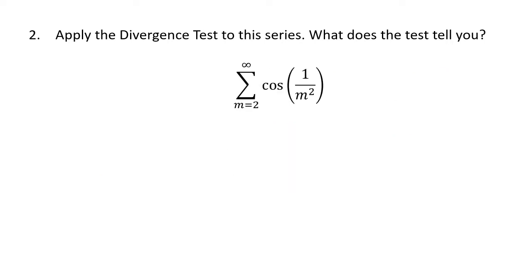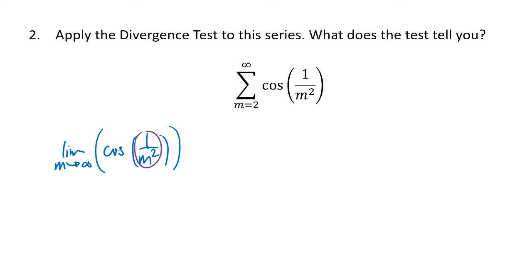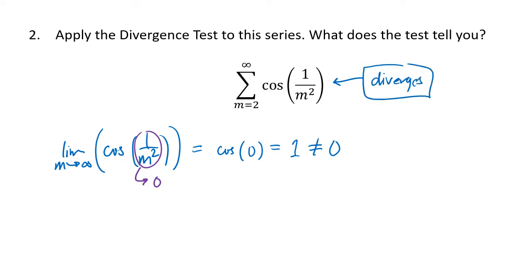For another problem, we look at the limit as m goes to infinity of cosine of (1/m²). The fraction 1/m² is going to go to 0, which means the limit goes to cosine of 0, which is 1. Because 1 is not 0, the terms we're adding up don't go to 0, which means this series diverges.